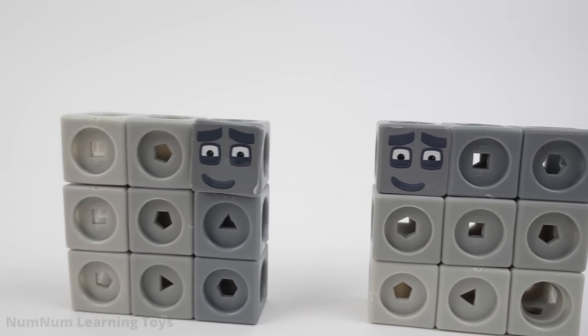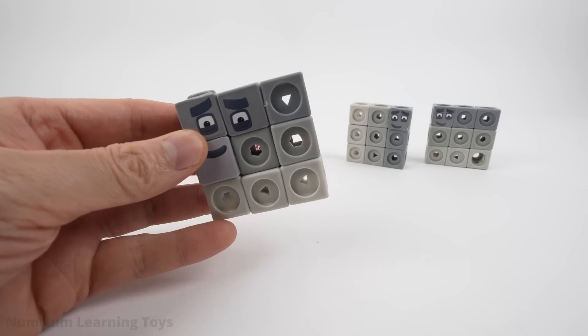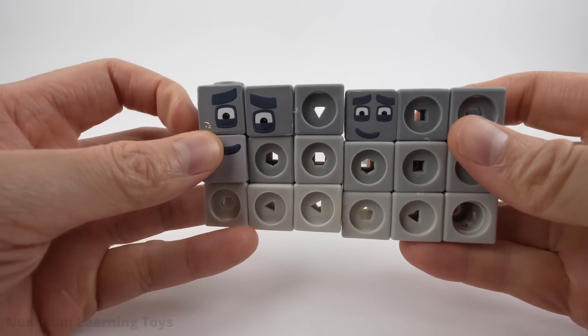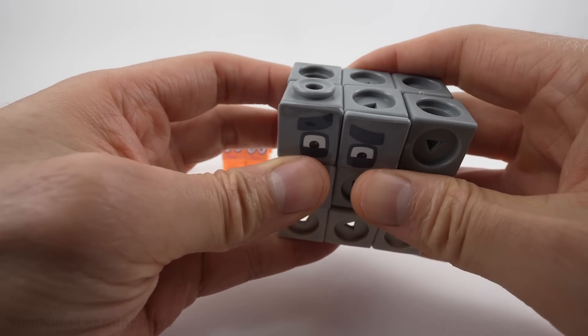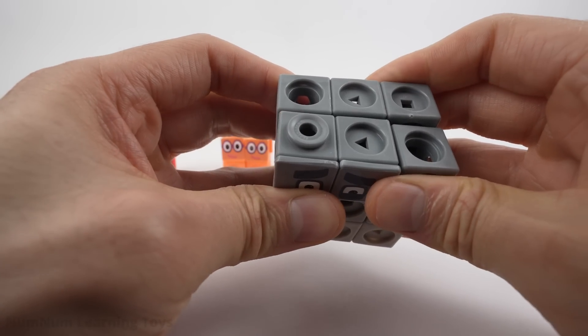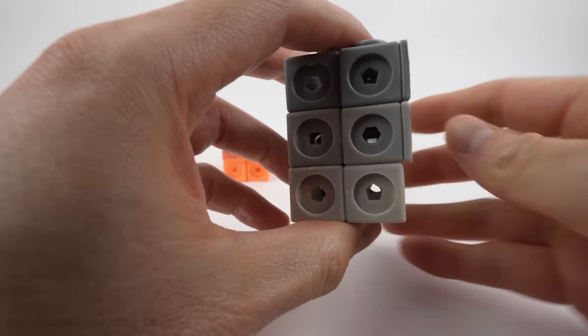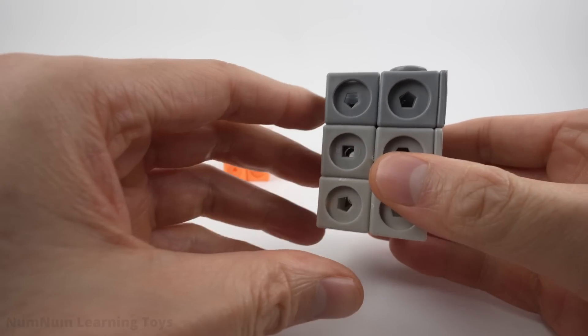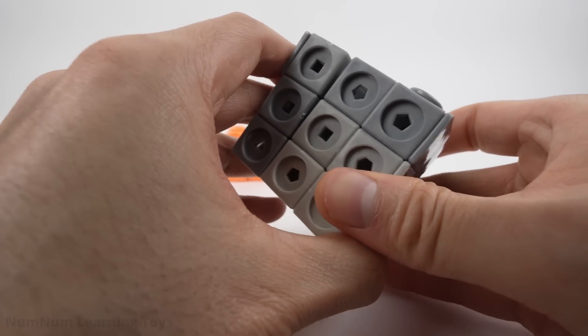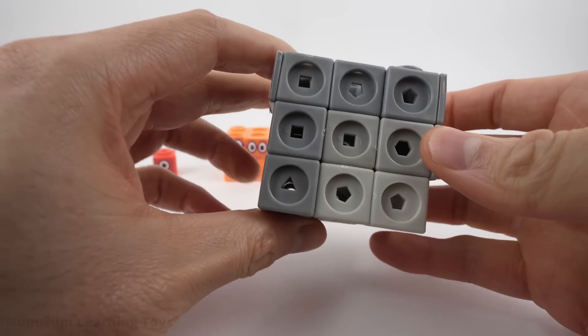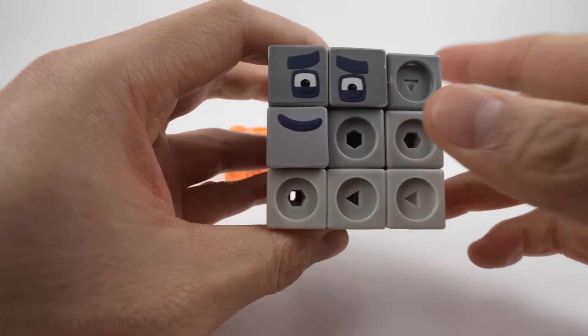Now we have 3 lots of 9. Let's put the squares together and see if we can build a cube. Remember, a cube is like a box that looks the same on all sides. This side looks different. We need one more square. There we go. Now all the faces of this cube is made of a 3 by 3 square.